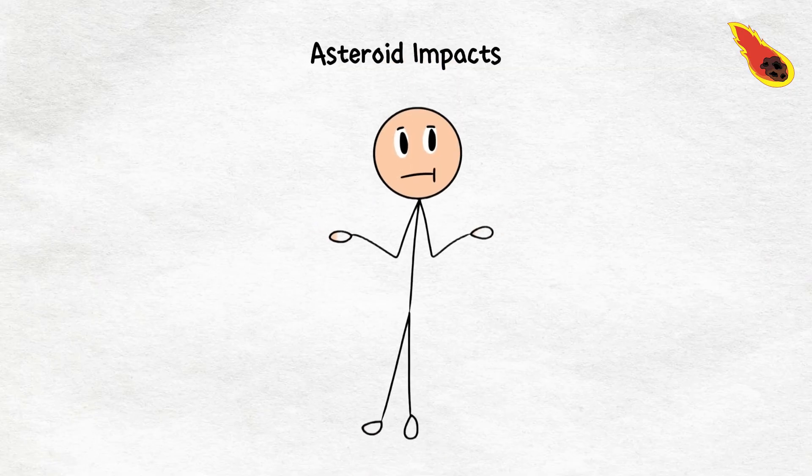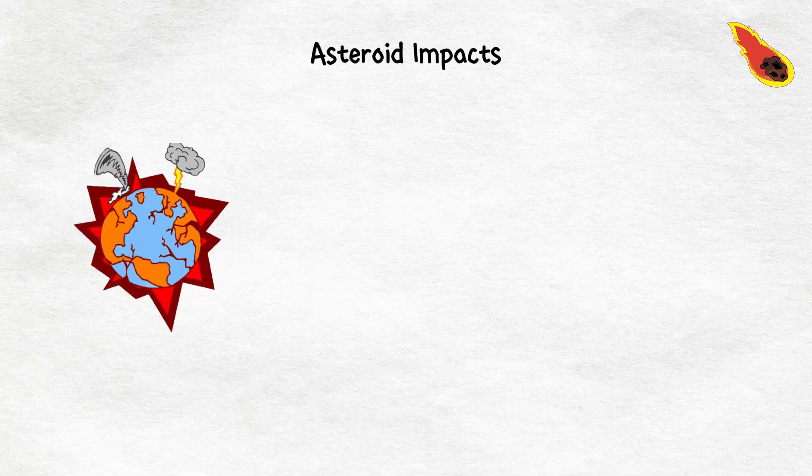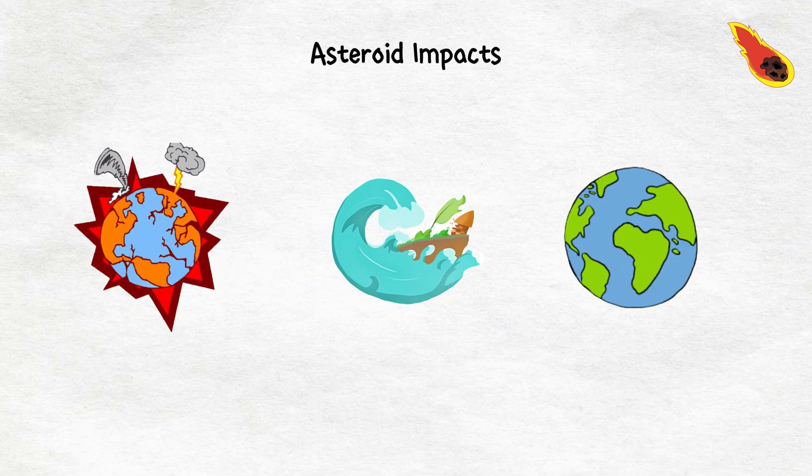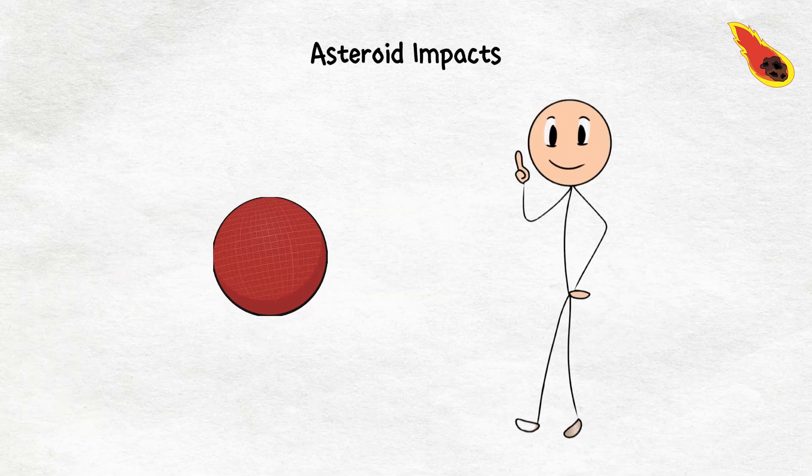Depending on the size, an asteroid impact could cause widespread destruction, trigger tsunamis, and plunge Earth into an impact winter where sunlight is blocked out. Let's just hope we are better at playing dodgeball than the dinosaurs were.